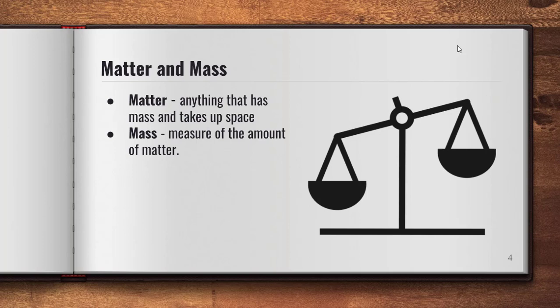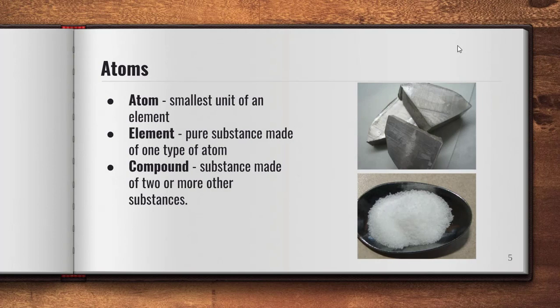Mass is the amount of matter, and mass is measured in a unit known as grams. The higher the amount of grams, the more matter something has. For example, my tape dispenser has slightly more mass — slightly more matter — than the pen does. Atoms are the smallest unit of an element; it's the smallest unit of matter that exists, and those are all of the things on the periodic table — carbon atoms, hydrogen atoms, oxygen atoms, and so on.